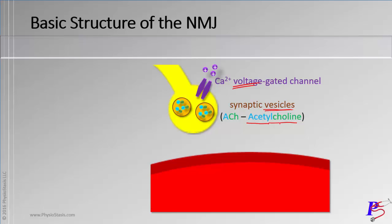There are different neurotransmitters in the body, such as dopamine and noradrenaline, that we'll talk about in the nervous system. But here, at the neuromuscular junction, the neurotransmitter you need to know is acetylcholine.